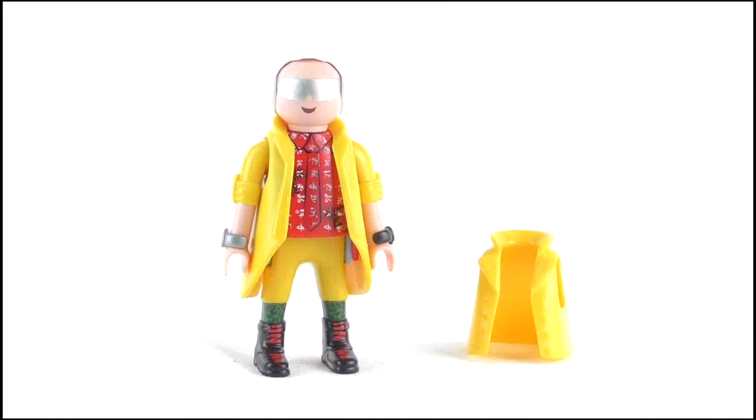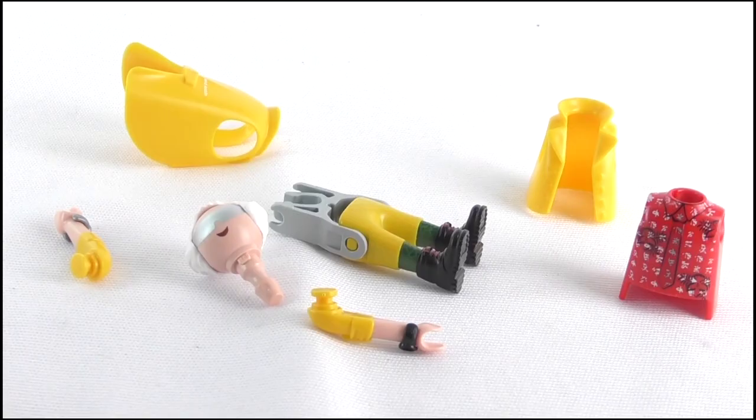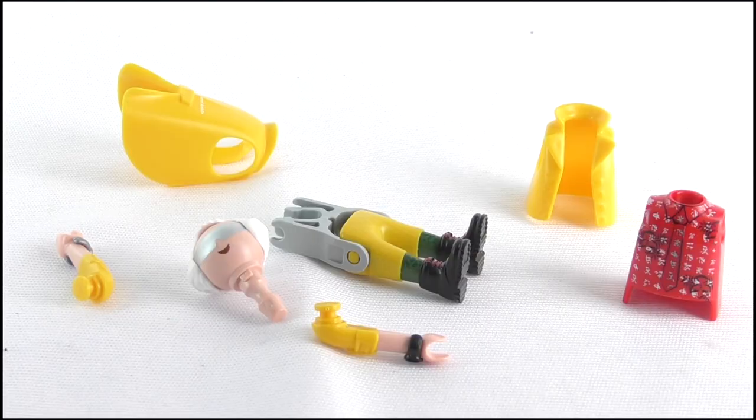Further to this, Doc comes with a shortened version of his yellow coat, which is used to allow him to sit in the DeLorean. It's a bit of a struggle to swap the coats, as you essentially have to take the entire figure apart to add it, but I applaud the thought that has been put into it.